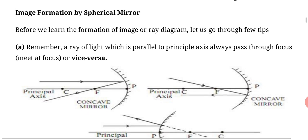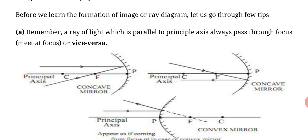First rule: in the diagram you are seeing, rays parallel to principal axis, after reflection, go through focal focus point on principal axis. And we can say rays coming from focus, after reflection in concave mirror, become parallel. So we can say ray of light parallel to principal axis always passes through focus, meets at focus or vice versa.